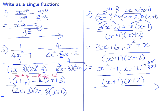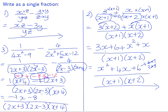And then if we add the like terms: x minus 8x is negative 7x, and positive 4 subtract 12 is negative 8. And that will be all over (2x+3)(2x-3)(x+4).